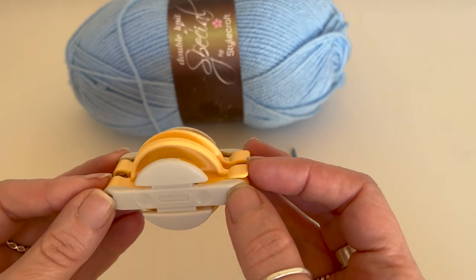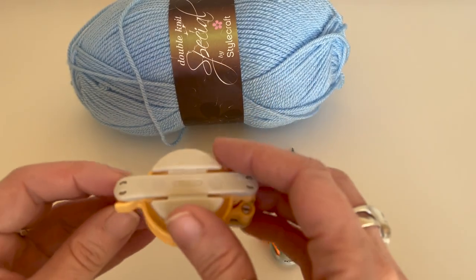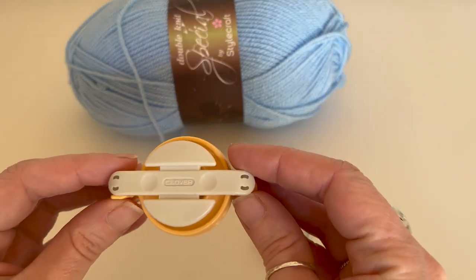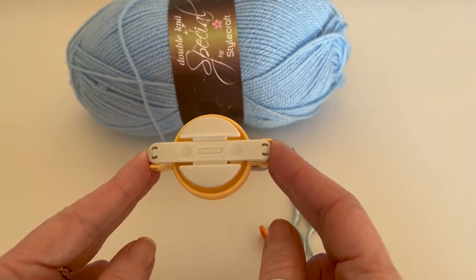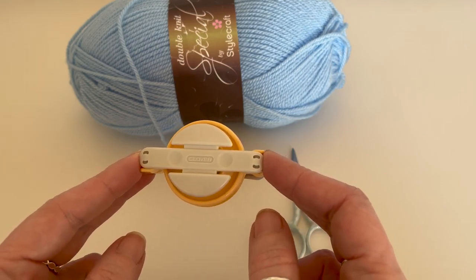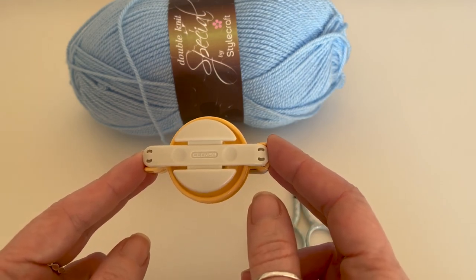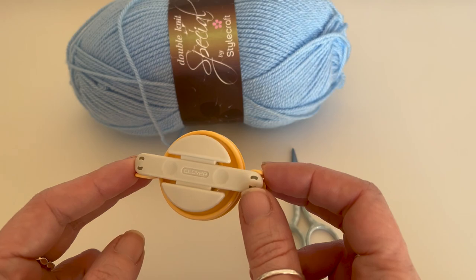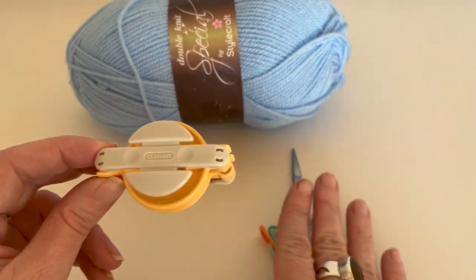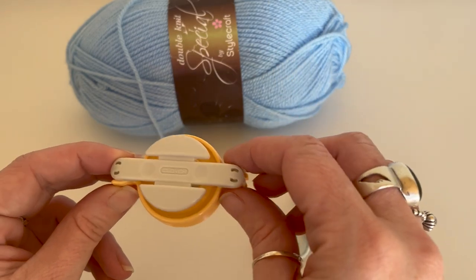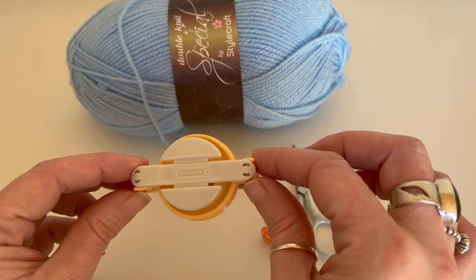You will need your pom-pom maker, this is a Clover one. I think I got this in a set, if I can find the link to the Clover ones I'll leave a link below and I'll also leave a link for a generic set. But I prefer the Clover ones, I think they're just a bit more sturdy. You'll need some scissors and you'll need your yarn. So let's get making.